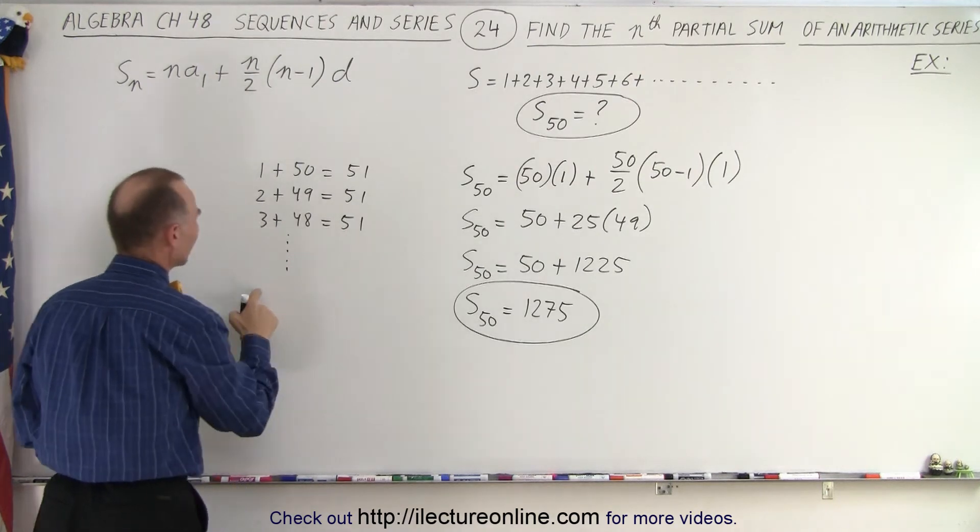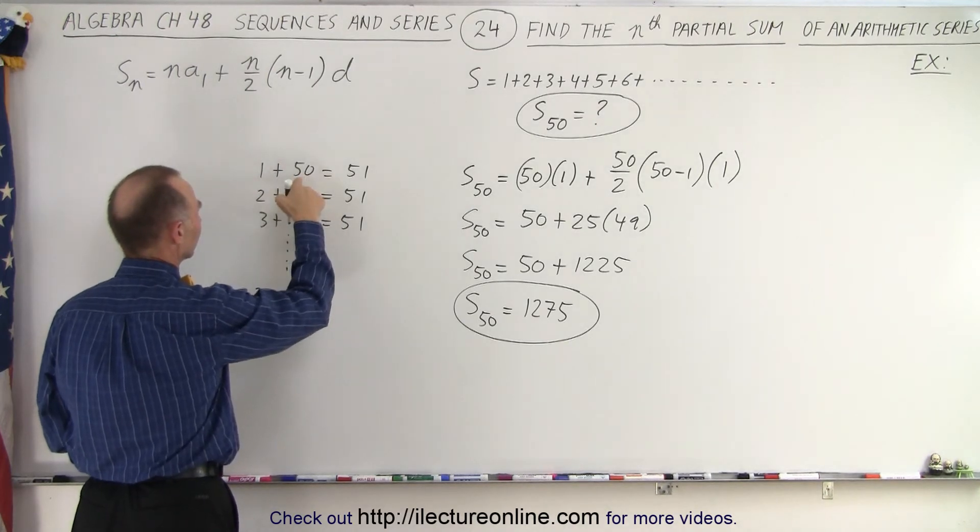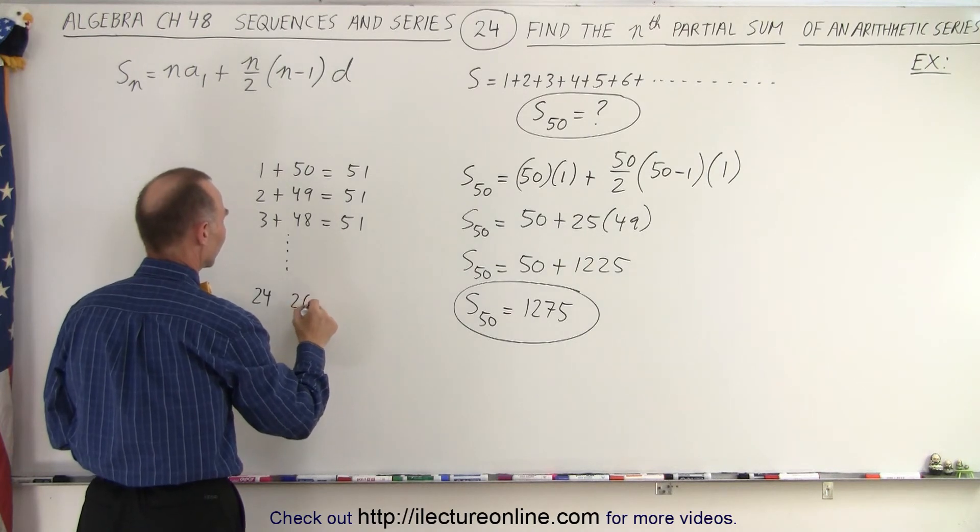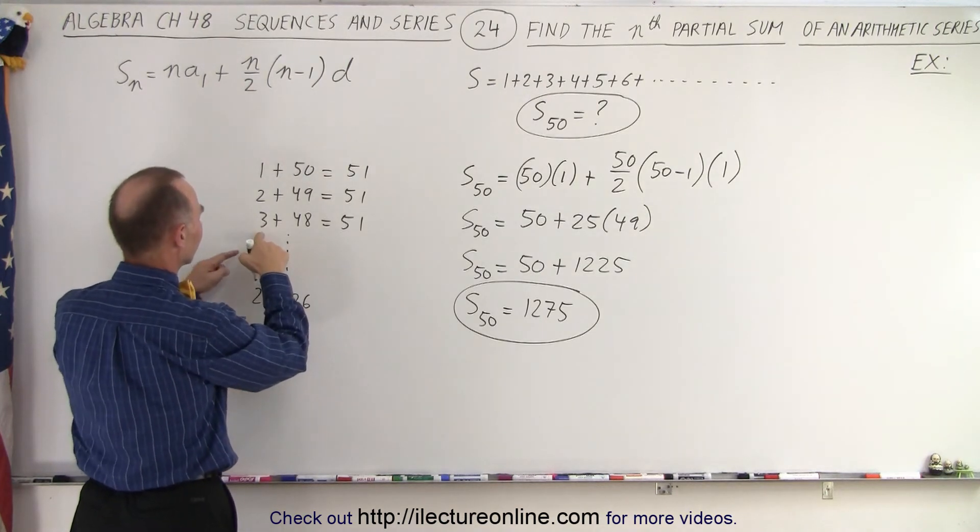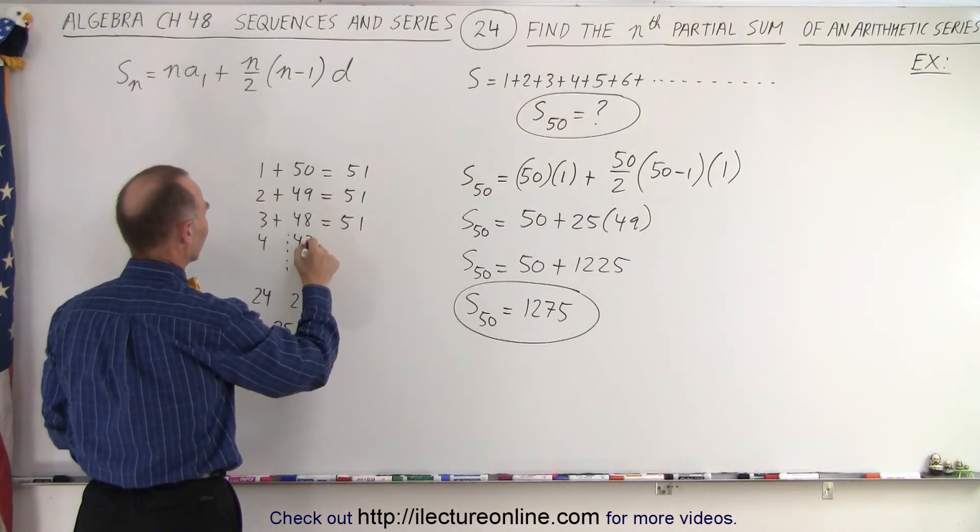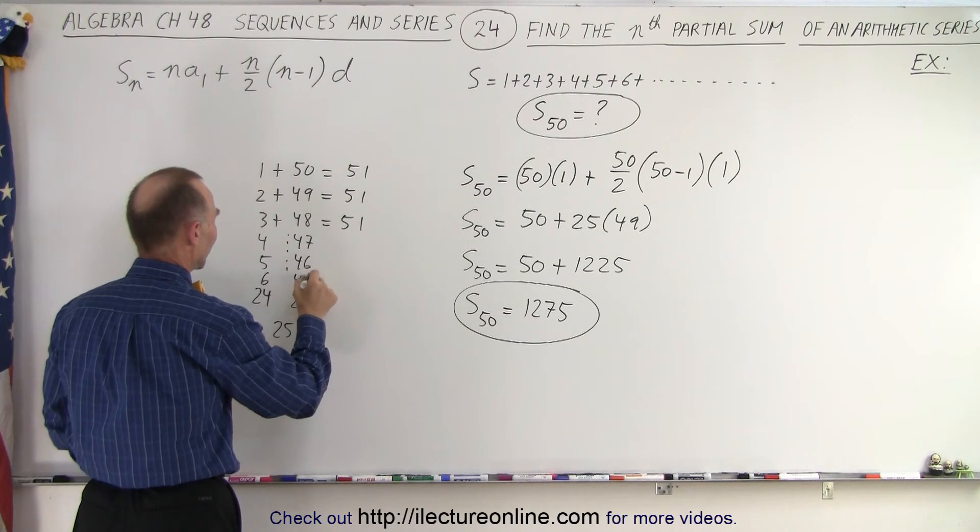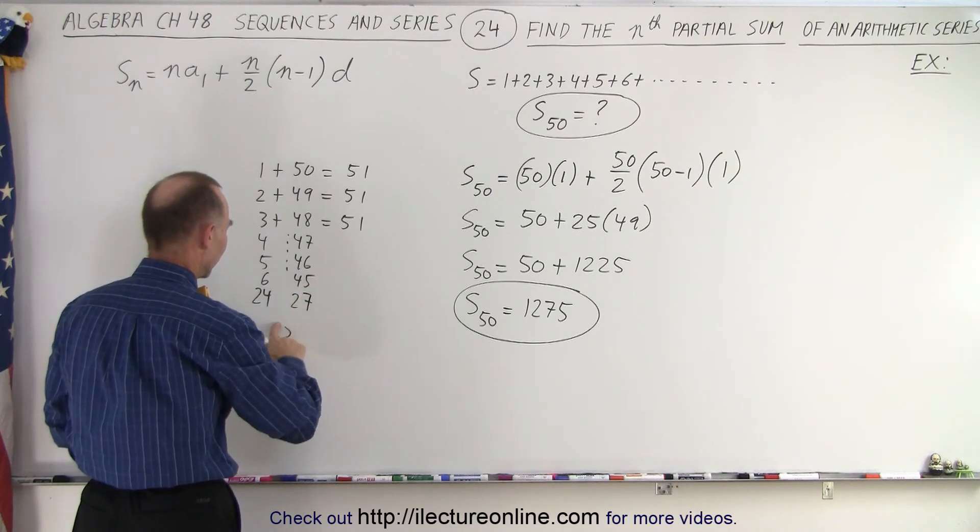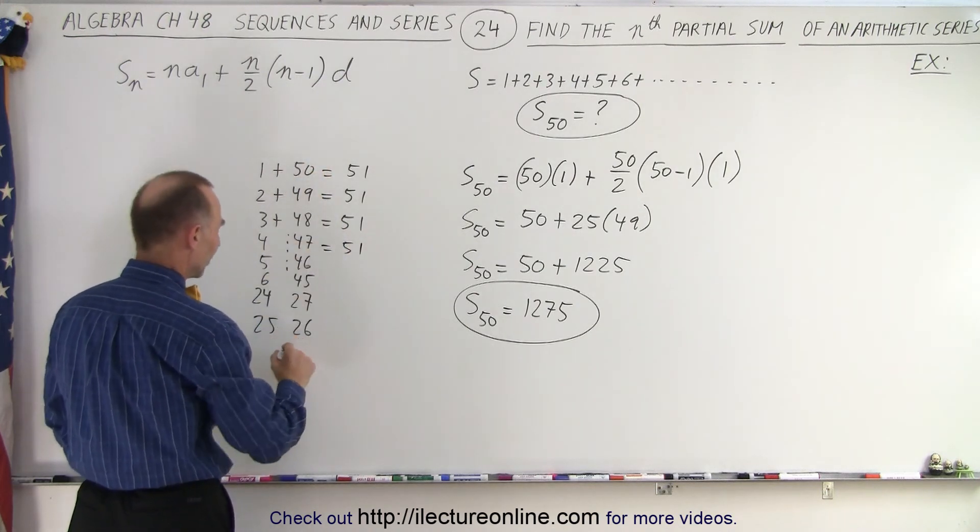And you would have to do that all the way, pairing numbers like 24 plus 27, 25 plus 26. That would be 51. And how many of those would there be? 25. So it would be 25 times 51.